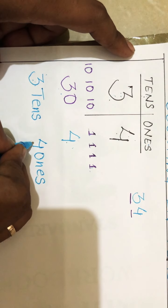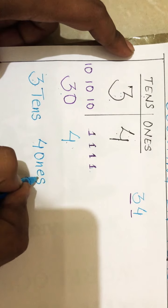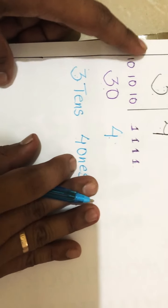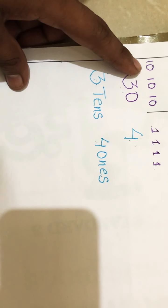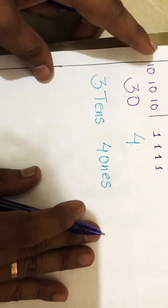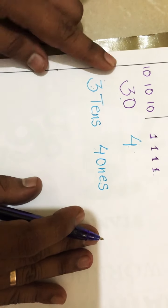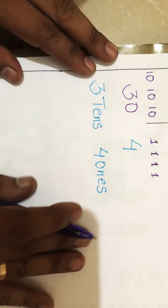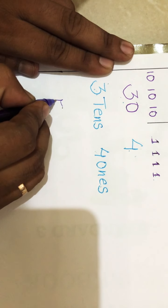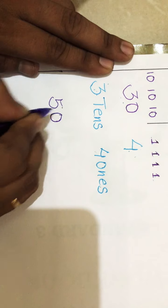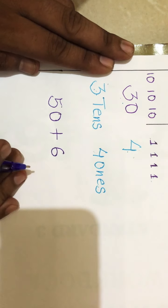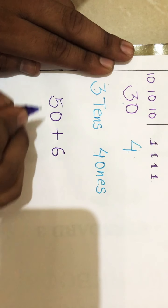Now suppose if you have a number like this - if they have given you 50 plus 6, you can write 50.